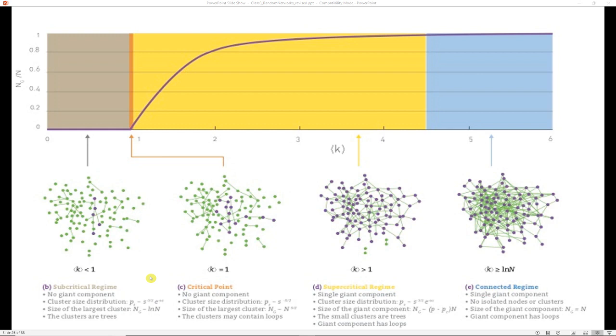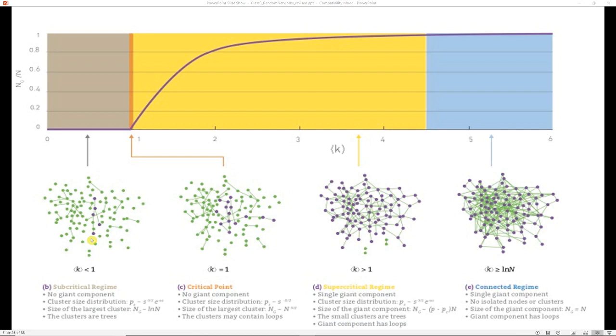And so here's a little bit more information about what each stage looks like. In the first stage, you have just some trees. You don't have any loops. You have no giant component, just kind of little groups of nodes that are linked together but aren't linked in a big way. When the critical point is reached, we still don't have the giant component, but we could have one. And each of the individual clusters of nodes might have loops at this point.